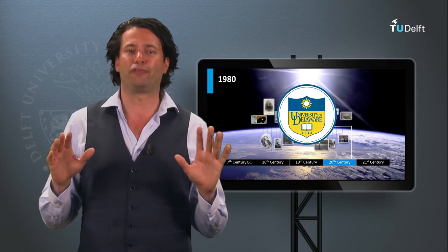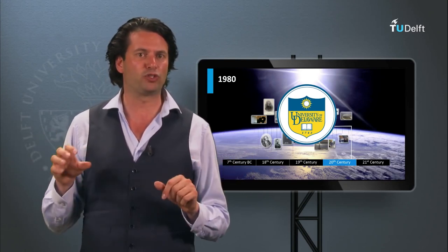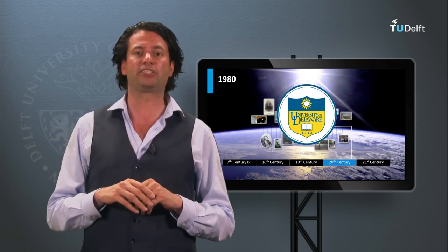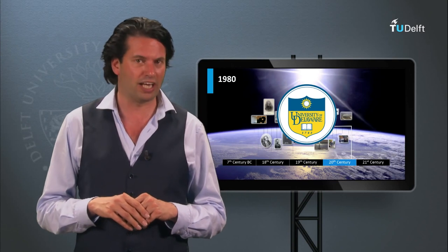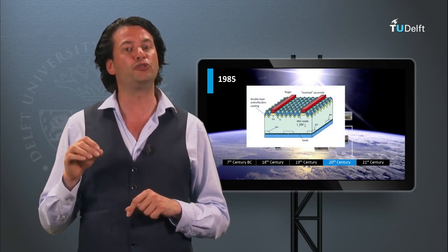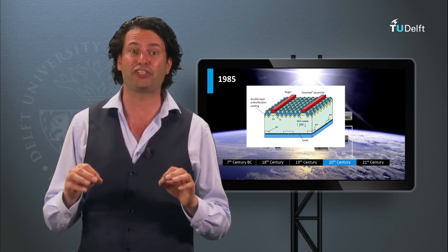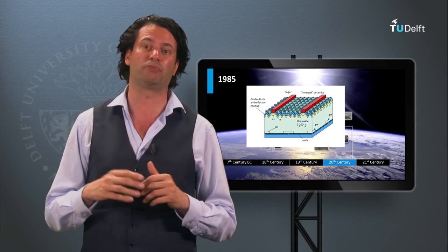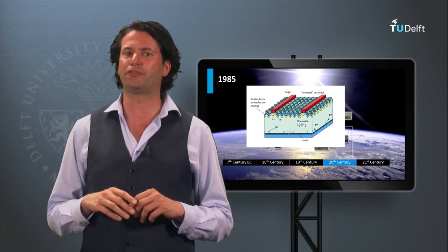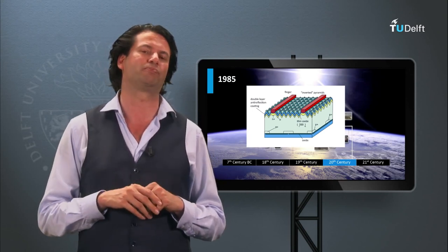In 1980 the first thin film solar cells based on copper sulfide and cadmium sulfide with conversion efficiency above 10% were demonstrated at the University of Delaware. In 1985 at the University of New South Wales in Australia, crystalline silicon solar cells with efficiencies above 20% were demonstrated. In week 4 the background and current state of high efficiency crystalline silicon PV devices will be discussed.